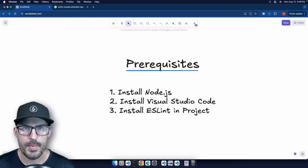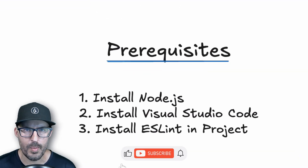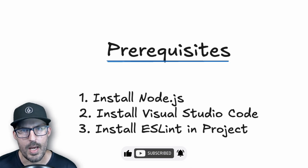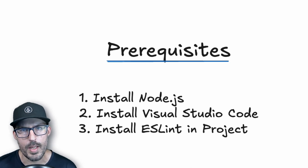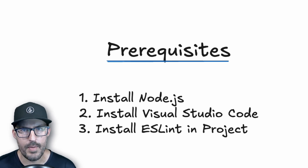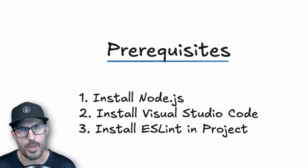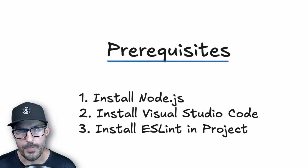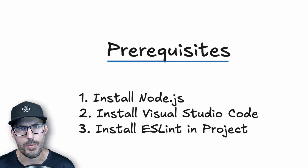Before we get started, there are a couple of prerequisites in order to follow along with this video. The first one is that you'll want to make sure that you've downloaded and installed Node.js, as it's required to install and run ESLint. The second one — and this one's pretty obvious — you want to make sure that you've downloaded Visual Studio Code. And finally, you're going to want to make sure that you've installed ESLint into your project. If you need help with any of these, I actually have videos on every single one of these topics, which I'll link down in the description below.